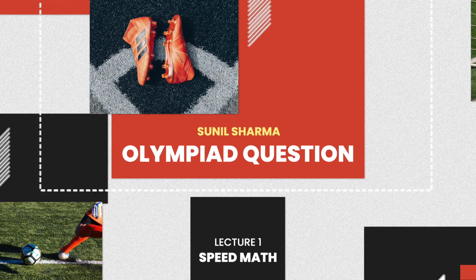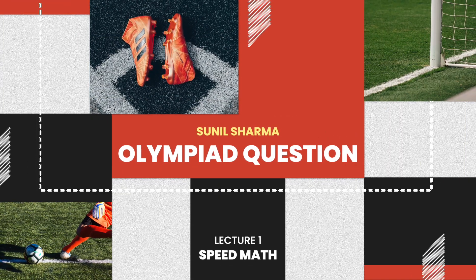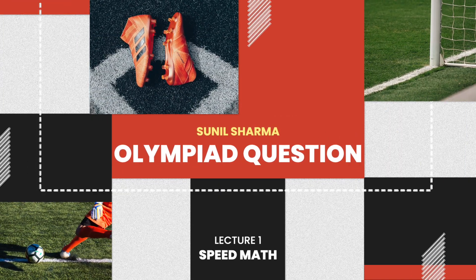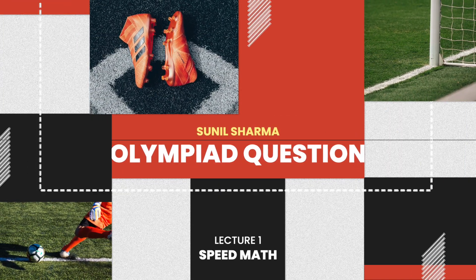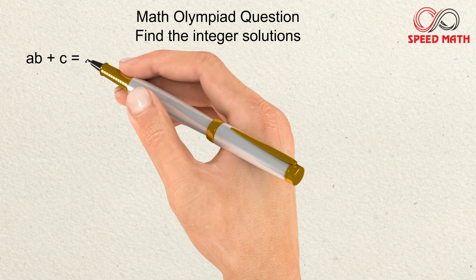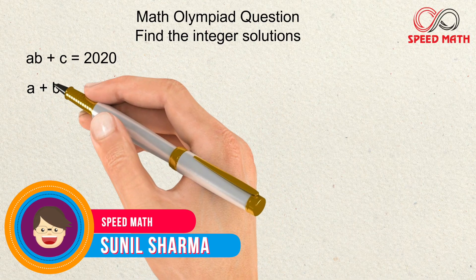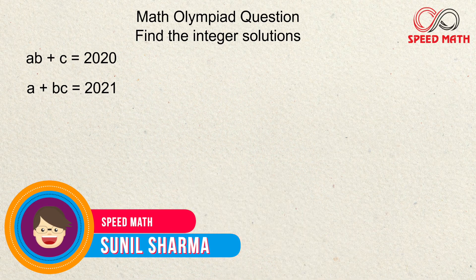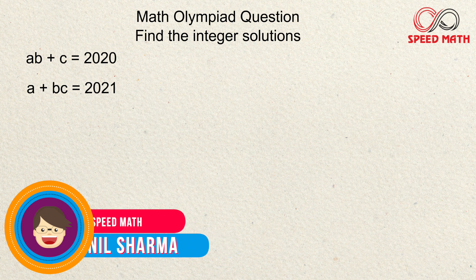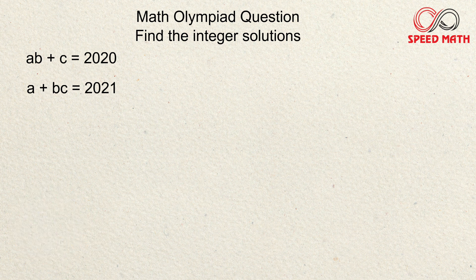Hello friends, this is Sunil Sharma and welcome back. Today we are going to solve an amazing mathematical Olympiad question. The question is: ab + c = 2020 and a + bc = 2021, and we need to solve these two equations. Observe we have three variables here: a, b, and c.